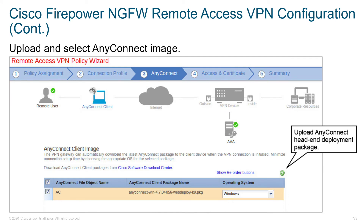Here we see the AnyConnect client image being specified. We go to Cisco's website, download the various images, and once downloaded they'll be stored inside of the firewall. Here we see the file name. When users connect, there's a negotiation where the user tells the head end what their image version is and they can get updates provisioned from the device.